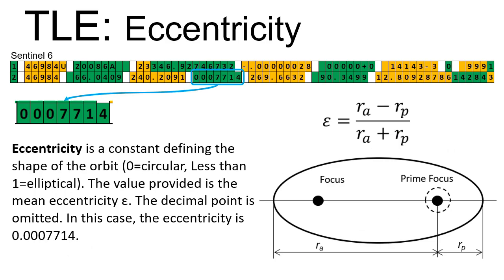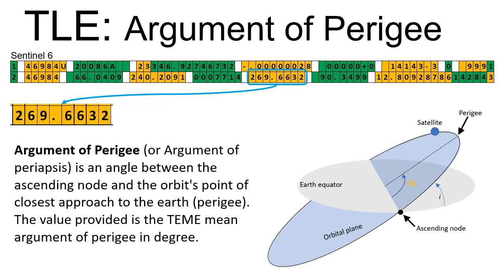Eccentricity is a constant defining the shape of the orbit. Zero means circular orbit. Less than one means elliptical orbit. Argument of perigee is an angle between the ascending node and the orbit's perigee.